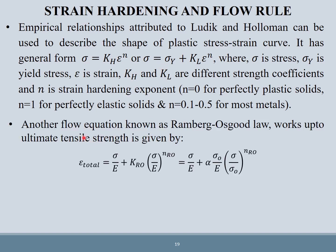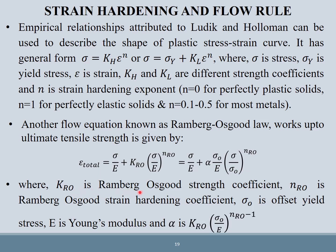Another flow equation is the Ramberg-Osgood law, which works up to ultimate tensile strength: total strain = σ/E + K_RO(σ/E)^n_RO = σ/E + α(σ_0/E)(σ/σ_0)^n_RO, where K_RO is the Ramberg-Osgood strength coefficient, n_RO is the hardening coefficient, σ_0 is the offset yield stress, E is Young's modulus, and α = K_RO. These are two examples of flow rules — the rules are complex and material-dependent.